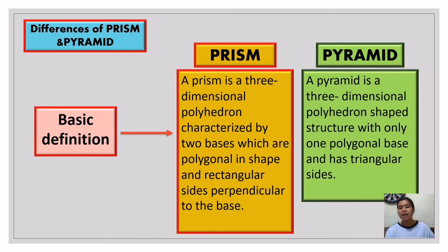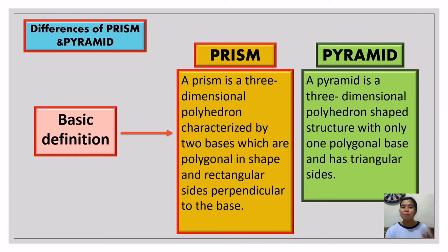Both prisms and pyramids are three-dimensional in shape. But not all 3D shapes are prisms — and not all 3D shapes are pyramids. If asked whether a pyramid is a 3D shape, yes, that is correct. But if asked whether a 3D shape is a pyramid, that is not always true. There are three-dimensional figures that are neither prisms nor pyramids, which we will discuss next.